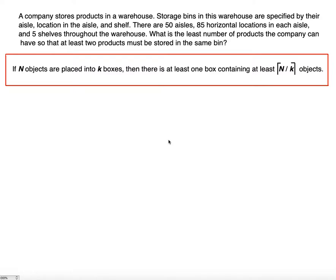A company stores products in a warehouse. Storage bins in this warehouse are specified by their aisle, location in the aisle, and shelf. There are 50 aisles, 85 horizontal locations in each aisle, and 5 shelves throughout the warehouse. What is the least number of products the company can have so that at least 2 products must be stored in the same bin?